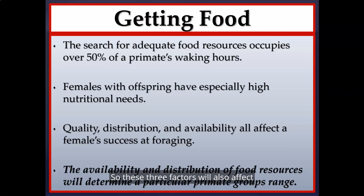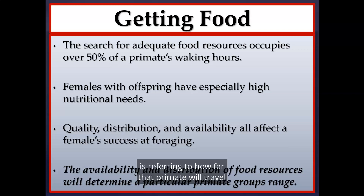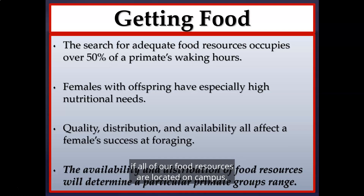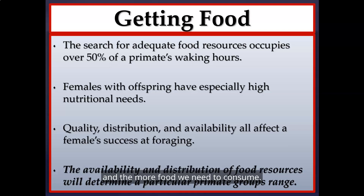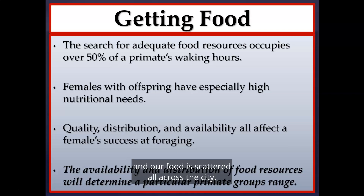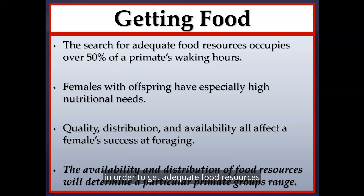These three factors also affect a primate group's range — how far that primate will travel in a given day in search of adequate food. For example, if all food resources are on campus and sufficient for the entire troop, there's little motivation to travel further. But if there's a resource shortage and food is scattered across the city, the group must expand its range, burning more calories in the process.